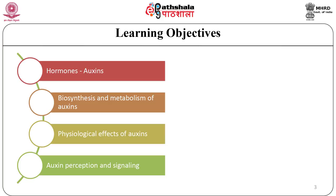Plant hormones are signal molecules that coordinate growth and development at sub-millimolar concentrations. They bring about dramatic changes in plants and are hence of great use in agriculture and horticulture, where they are applied exogenously to bring about an alteration in growth and development and hence increase the agronomic value of crops.